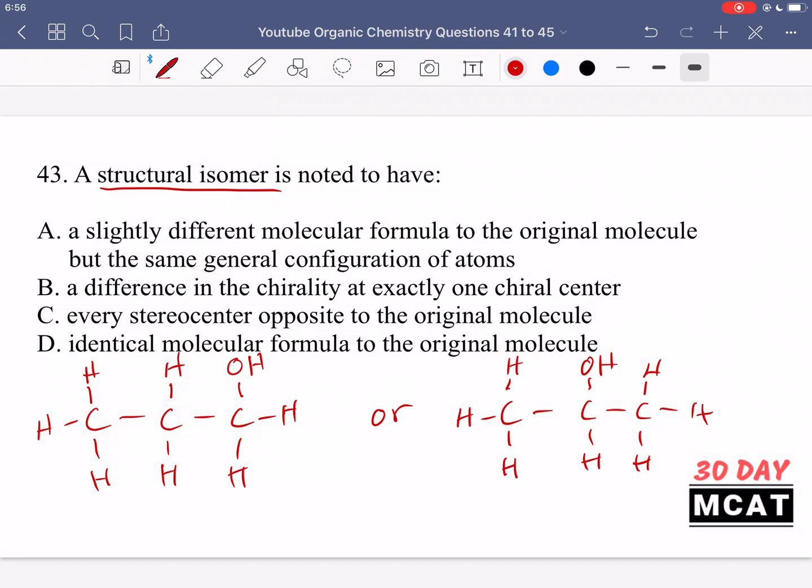Option A says a slightly different molecular formula—no, that's incorrect. You have the exact same molecular formula. Option B says a difference in chirality at exactly one chiral center—no, that would be talking about stereoisomers, which don't differ by moving atoms around but rather how bonds are oriented in 3D space. Option C says every stereocenter opposite to the original molecule—this is talking about enantiomers, again stereoisomers, not structural isomers.